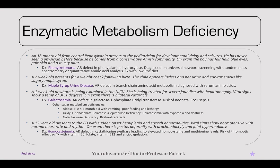A 12-year-old presents to the ED with sudden onset hemiplegia and speech abnormalities. Vital signs are normotensive with a normal heart rate. On exam, there's a pectus deformity, arachnodactyly, and joint hypermobility — a Marfanoid habitus. This is homocystinuria. These patients are hypercoagulable, so this child presented with a CVA or stroke. It's an autosomal recessive defect in cystathionine synthase, leading to elevated homocysteine and methionine levels. Treatment is vitamin B6, folate, B12, and anticoagulation.